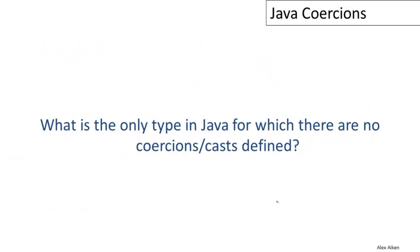Now here's a little Java trivia question. So it turns out that there is one type in Java for which there are no coercions or casts defined. So there are no implicit conversions or even explicit conversions from that type to any other type. And the answer to the question, which is the only one, is bool. So only the type boolean has no coercions or casts to another type.